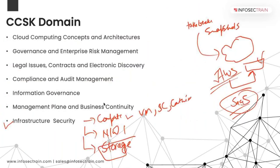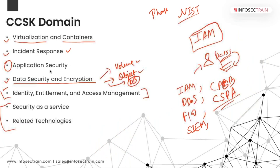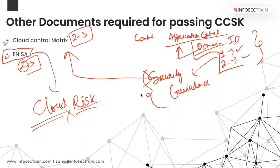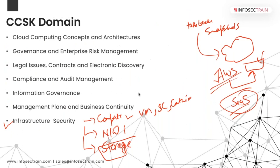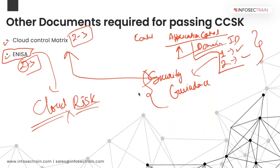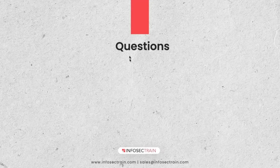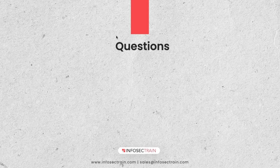There are 14 domains total — seven on the first page and seven on the second page in the Security Guidance. Do not get confused if you see them split across two slides. Now let's discuss some sample questions to give you a hint of what kind of questions you'll be getting in the exam.